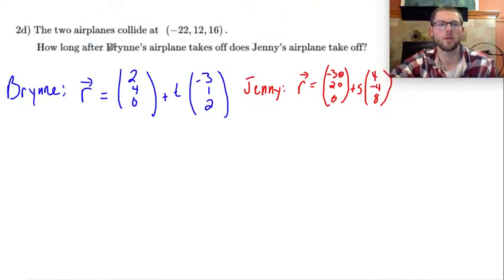For 2D, I'm told that the two airplanes collide at this position, negative 22, 12, 16. So I want to find out how long after Bryn's airplane does Jenny's airplane take off?